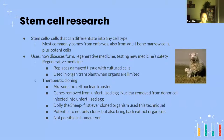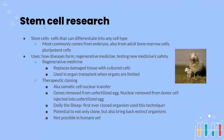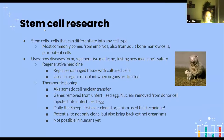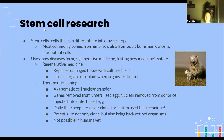Stem cell research is a favorite topic. Stem cells are cells that have the potential to differentiate into any cell type — they are totipotent or pluripotent, meaning they can turn into any cell type. They most commonly come from embryos, but also from adult bone marrow cells, which contain hematopoietic stem cells (HSCs).